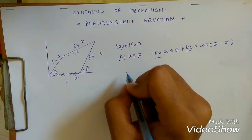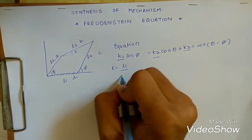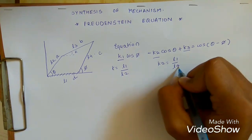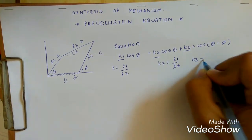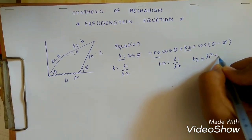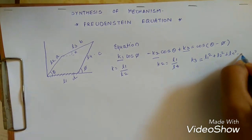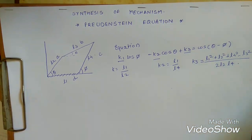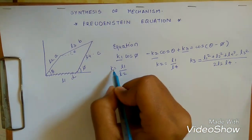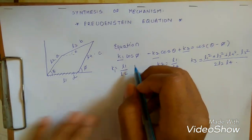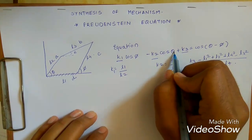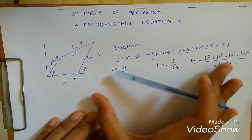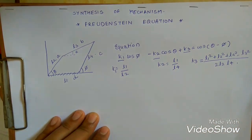k1 is equal to L1 upon L2, k2 is equal to L1 upon L4, and k3 is equal to (L1² + L2² + L4² − L3²) upon 2·L2·L4. In this way we can calculate k1, k2, and k3. We will be provided phi and theta in the given example, and this is Freudenstein's equation in short for calculating the lengths of the links in a mechanism.